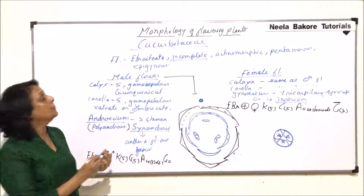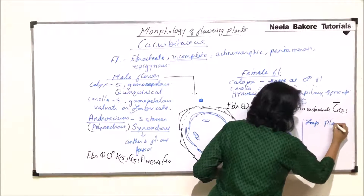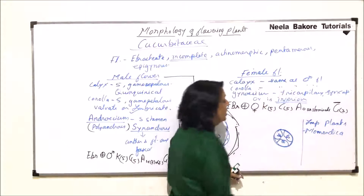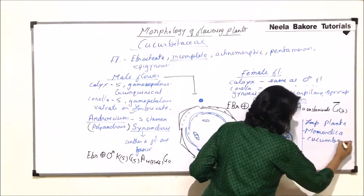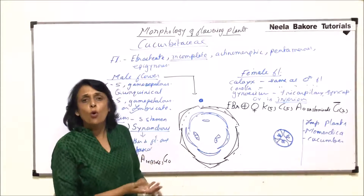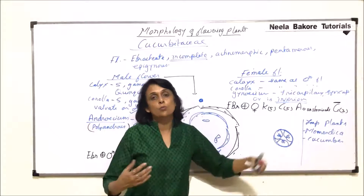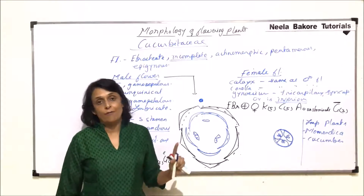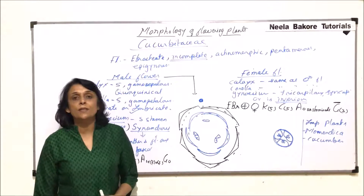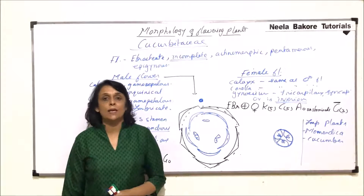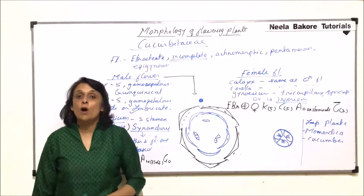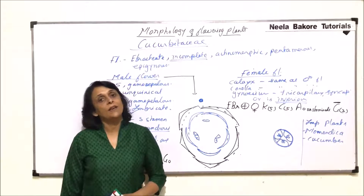Important examples of the Cucurbitaceae family include Momordica (bitter gourd) and cucumber. These are commonly called cucurbits, or the gourd family — bitter gourd, cucumber, smooth gourd, and rough gourd all belong to this family. We have now discussed all eight important angiosperm families most commonly tested in competitive exams. With this, the chapter on morphology of flowering plants is complete, and from the next video we will start with anatomy of flowering plants.